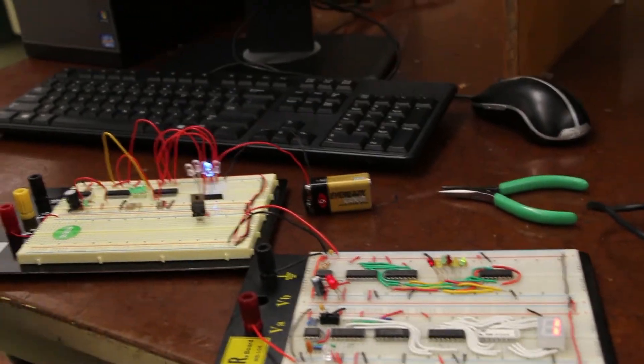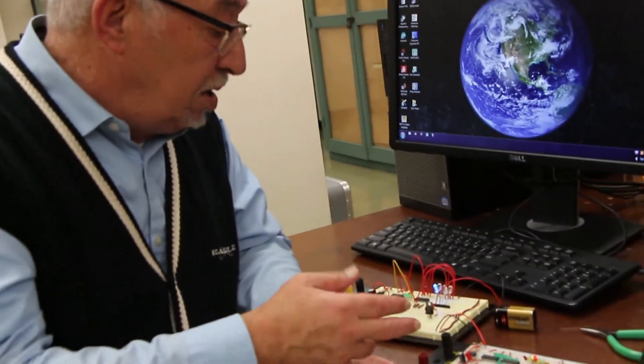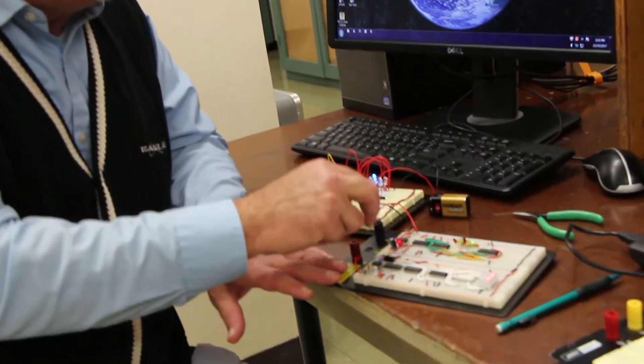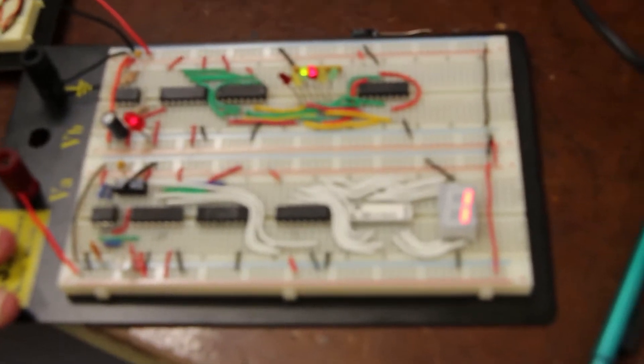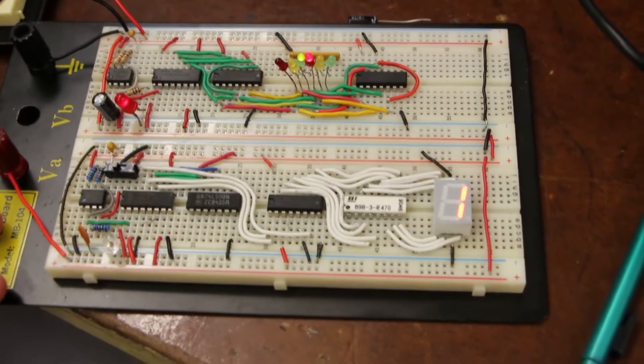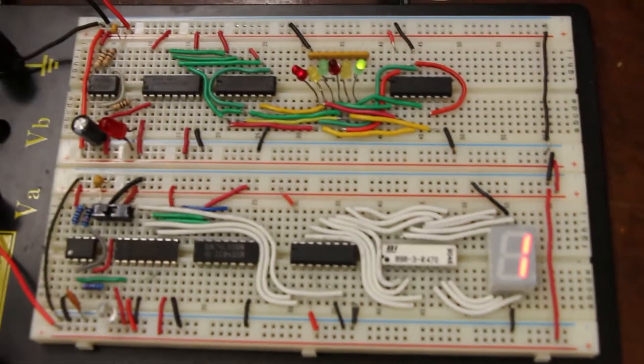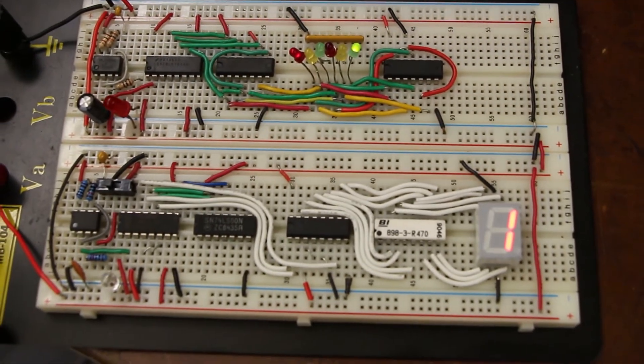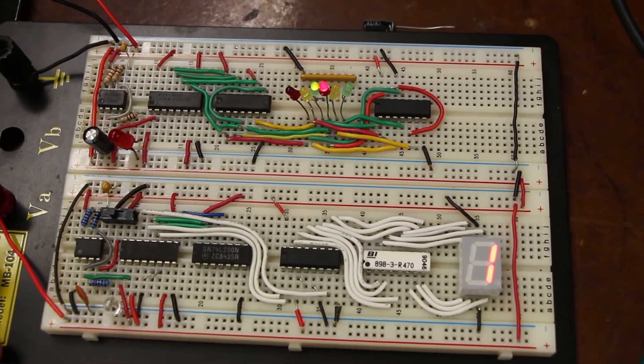For example, you will see that the first two stages of the traffic light controller are going to be exactly the same as the one you will build in experiment number seven. This is the reason I tell the students not to dismantle the first two stages, because they will be used with added circuitry to build the traffic light controller.